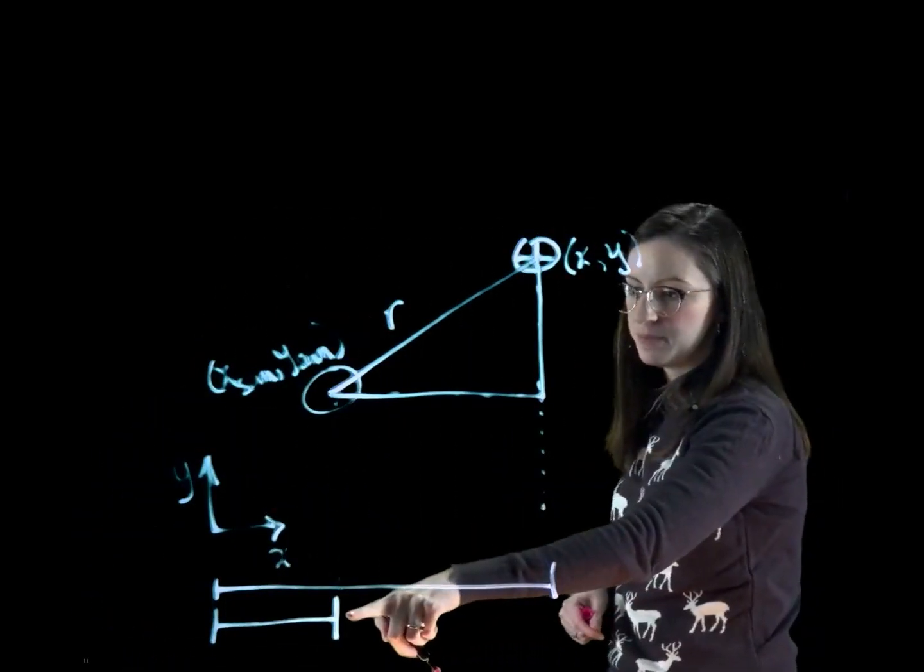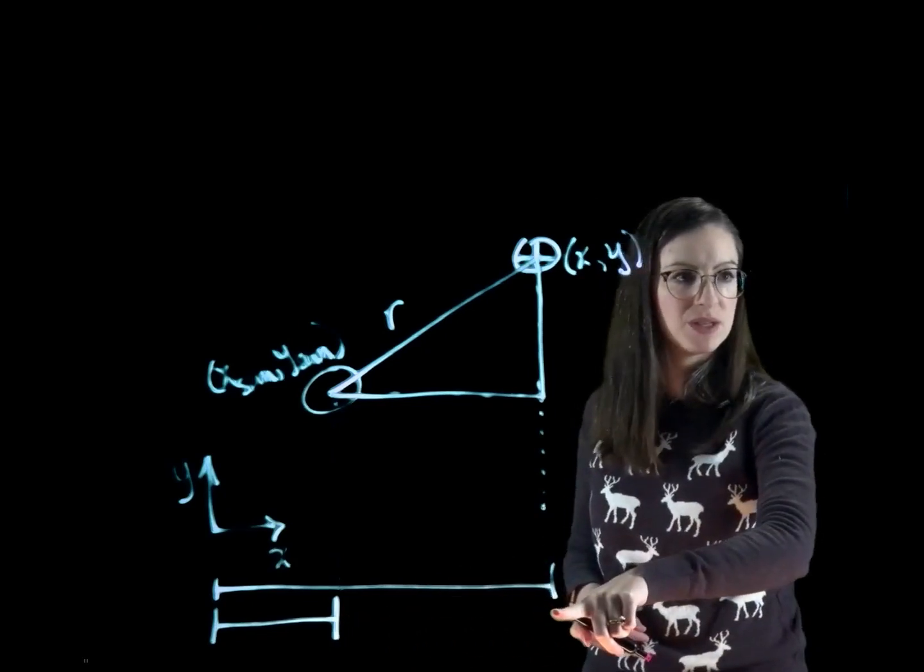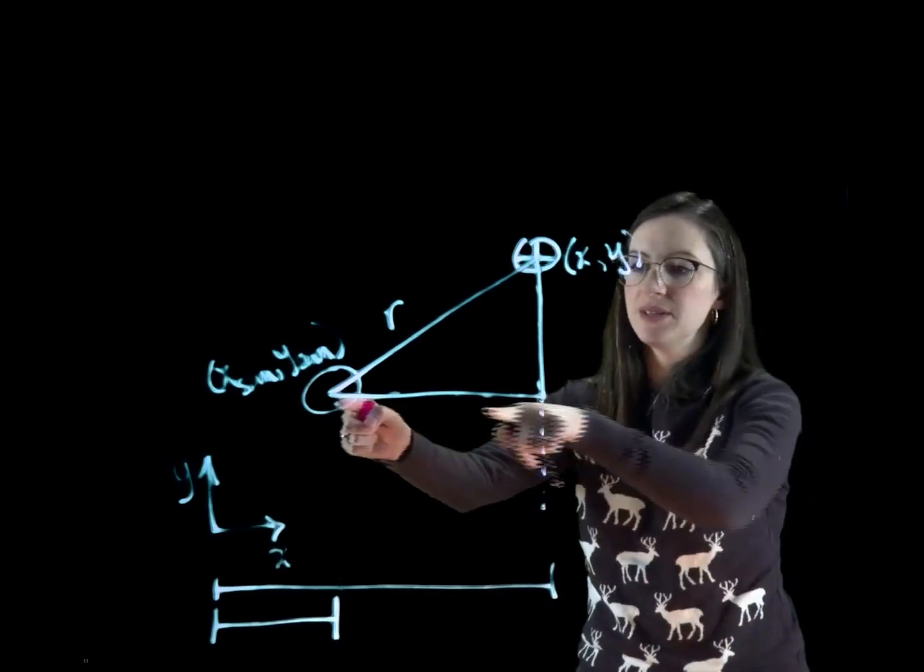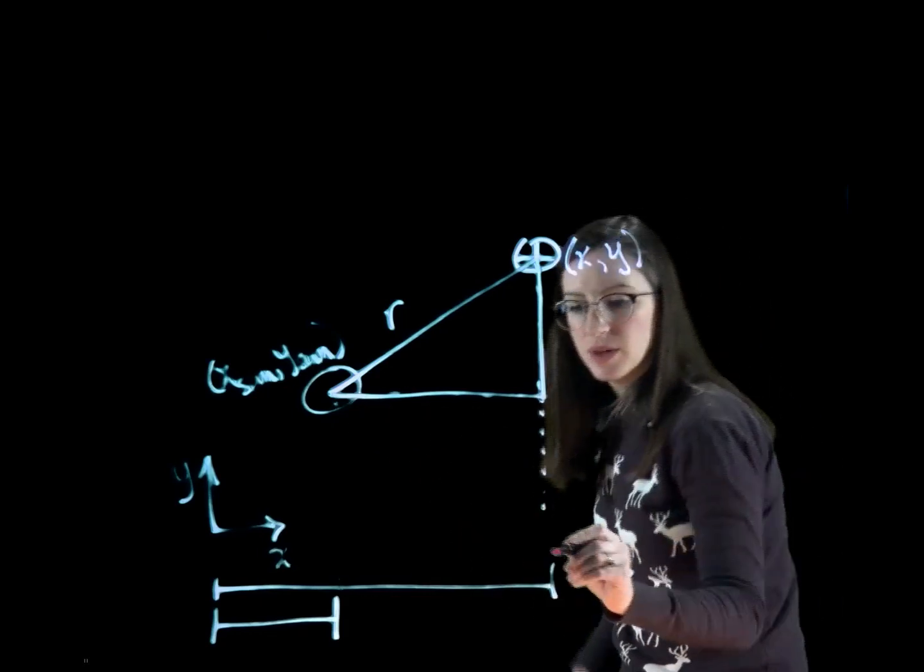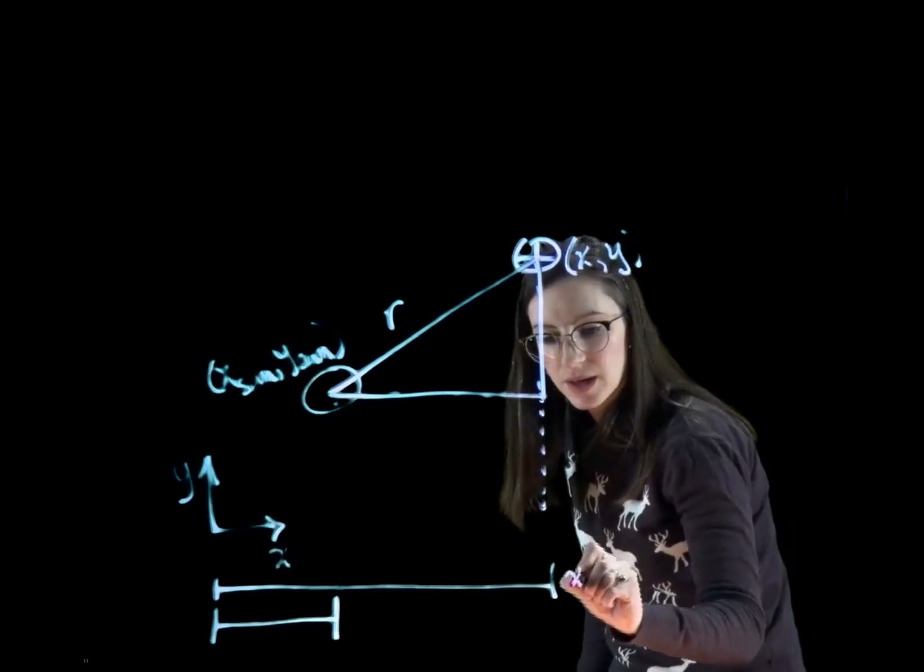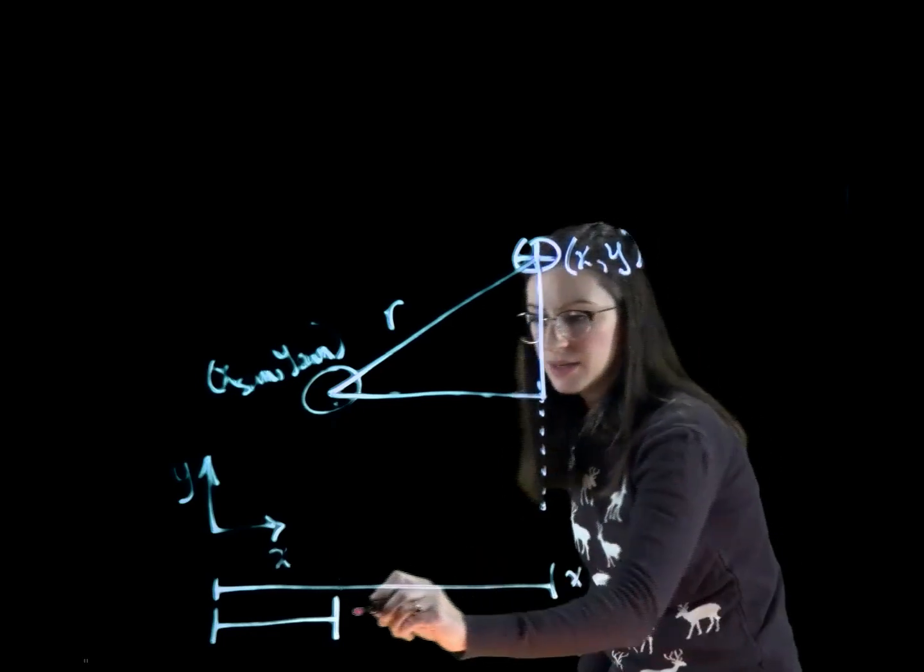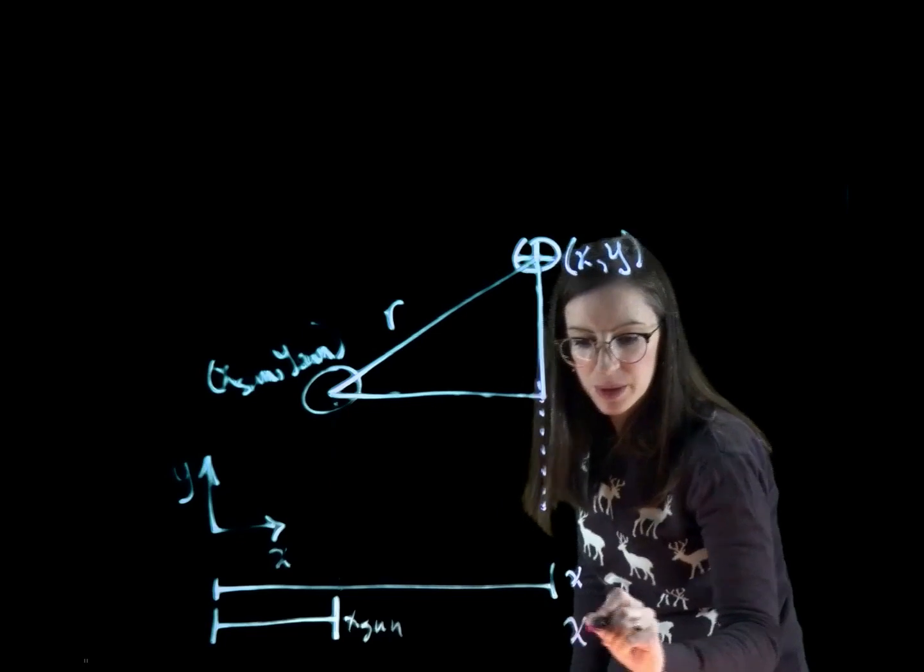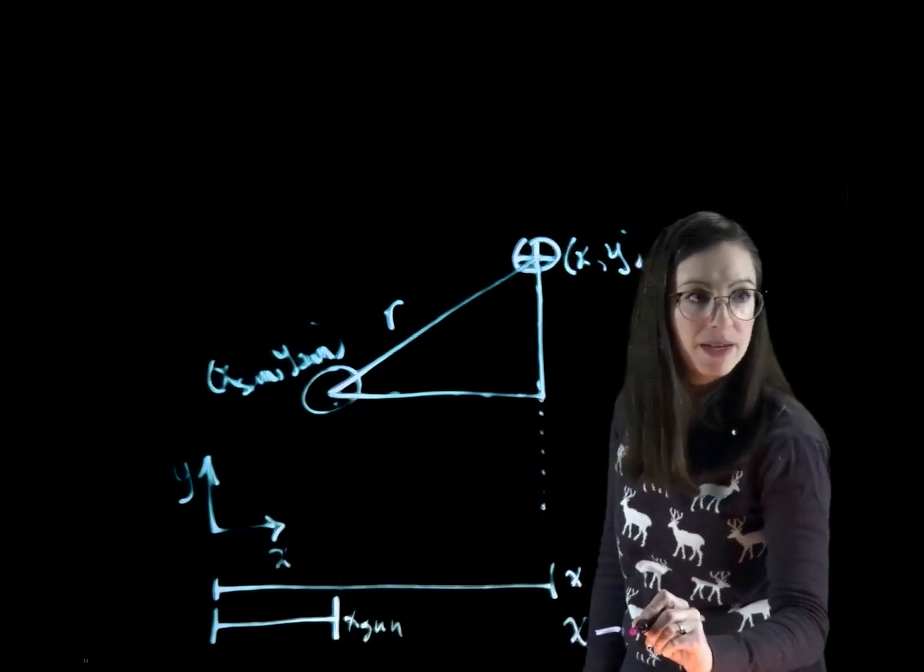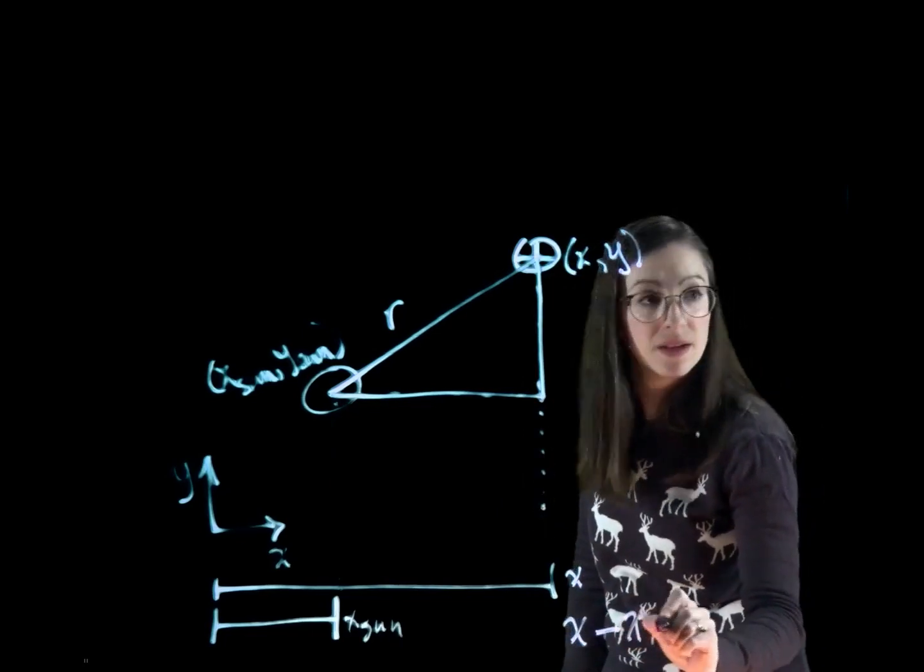So you can see then from this image here, and actually I'll move out of the way so you can see that a little bit better, we need to know the difference between these two lines in order to get the length of this part of the triangle. And so this is x, this is x sun, and we're going to just do a little bit of math. x minus x sun.